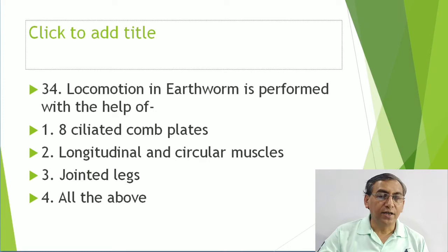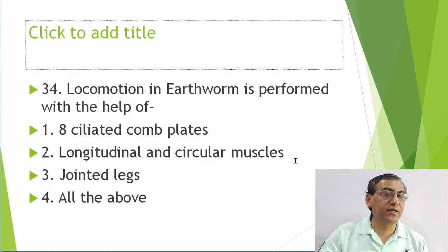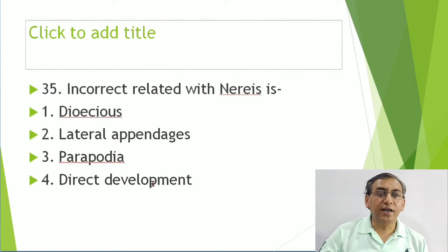Locomotion in earthworm is performed with the help of longitudinal and circular muscles. Also relevant: cilia in Ctenophora, jointed legs in Arthropoda. So the answer for locomotion in earthworm is longitudinal and circular muscles.